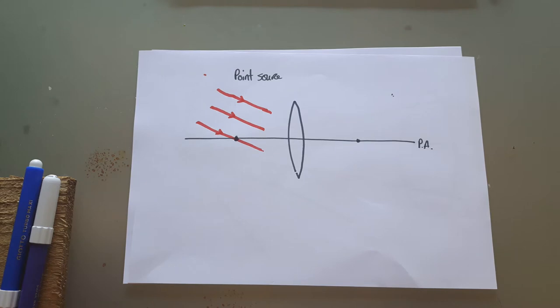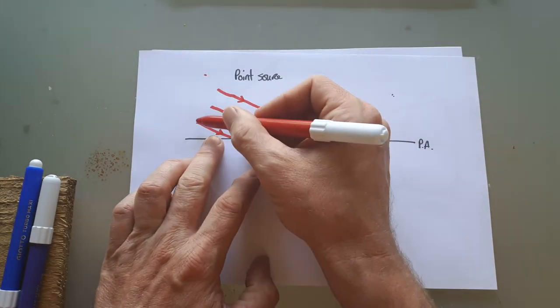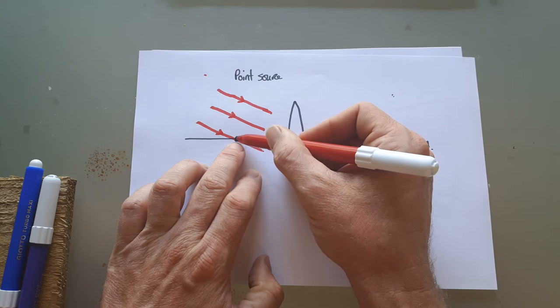That's why they are coming in parallel. They'd only be still spreading out if the object was very nearby, so not a telescope used for looking at stars but a telescope for looking at something on earth.